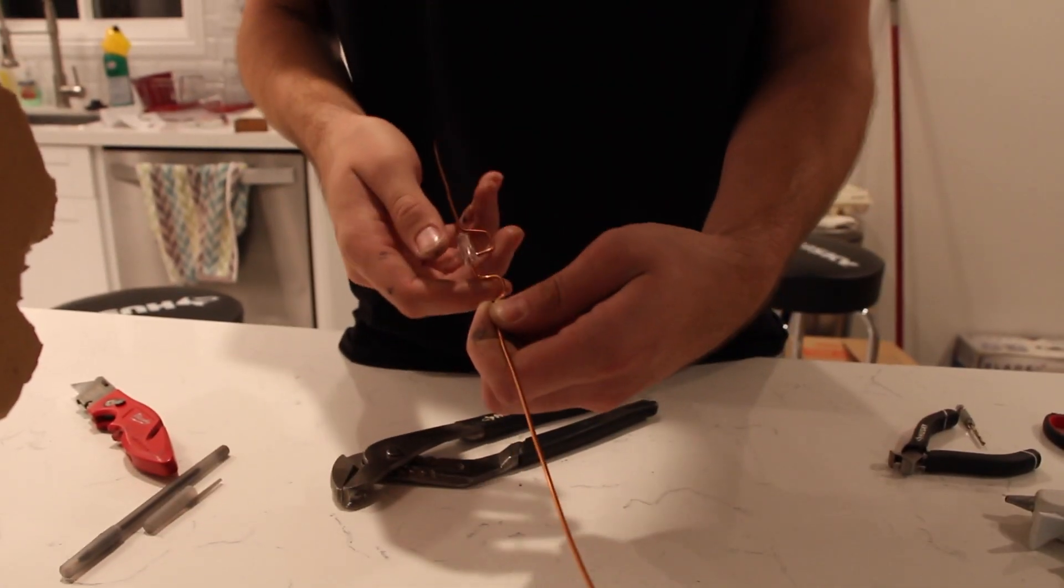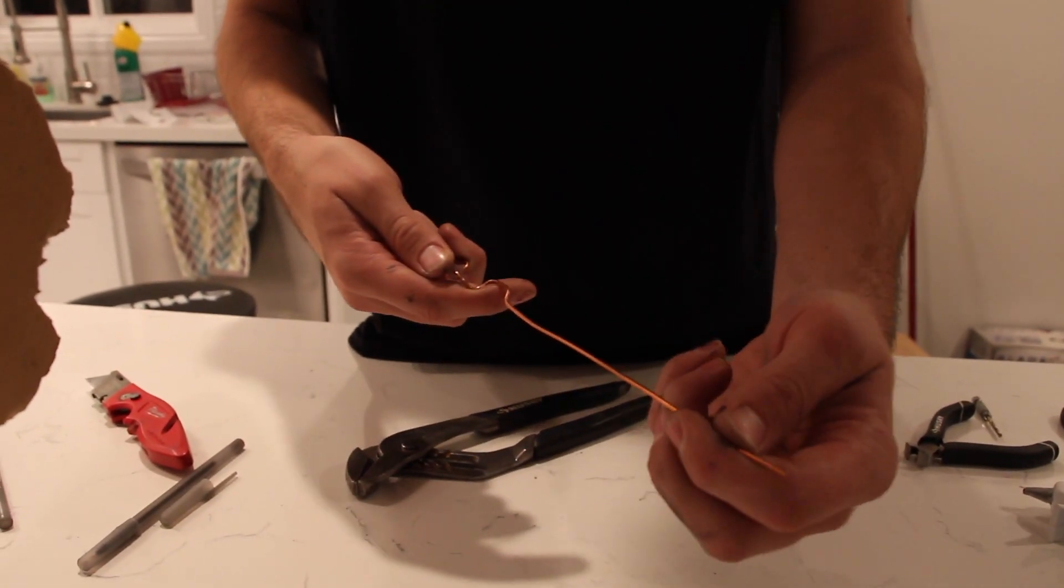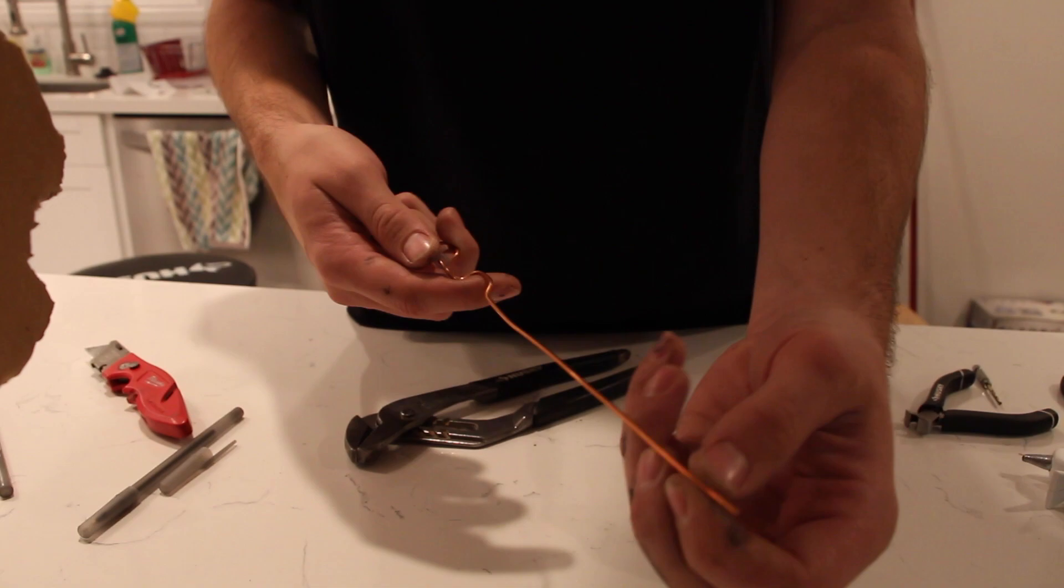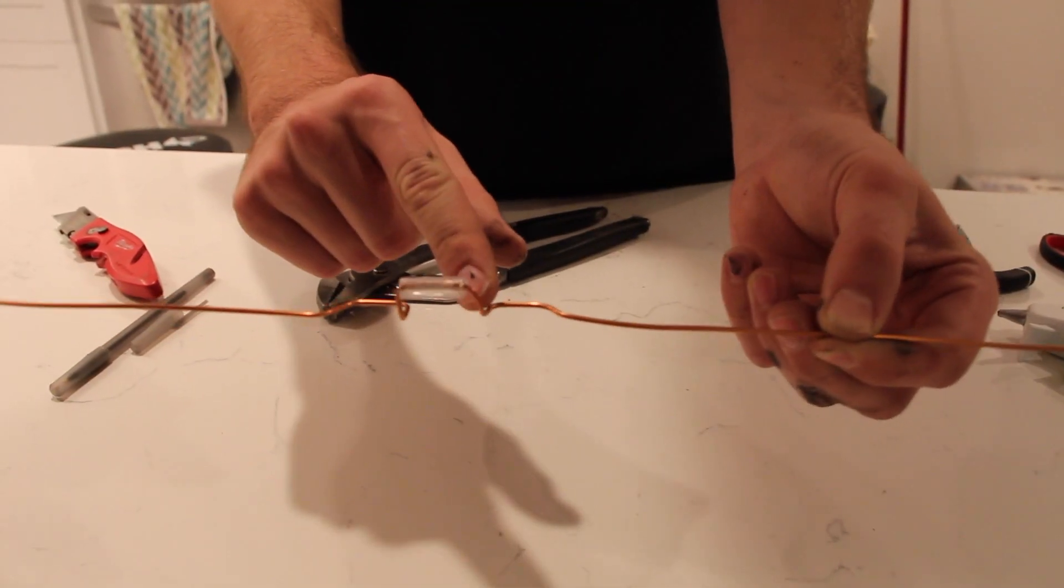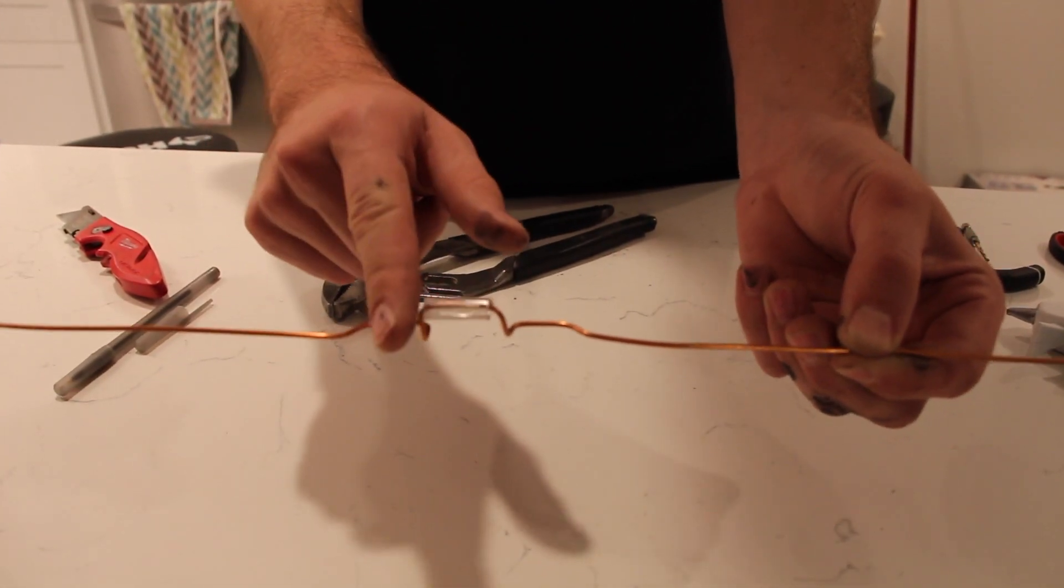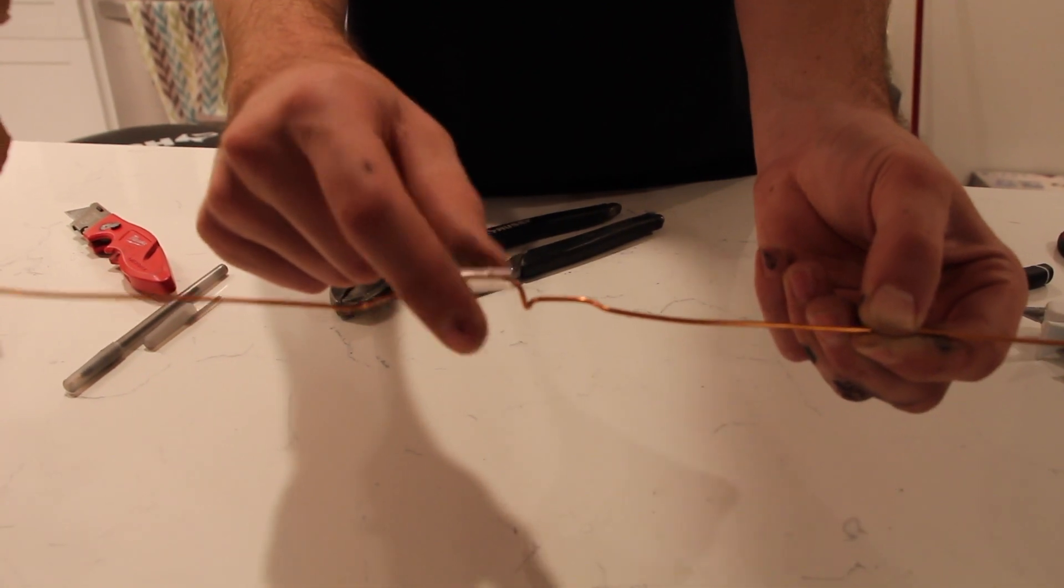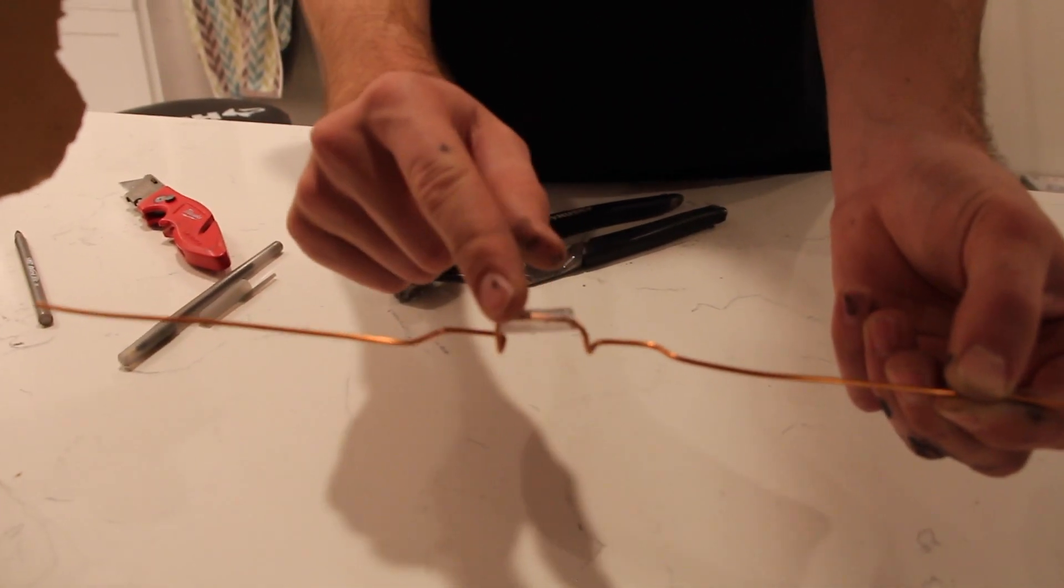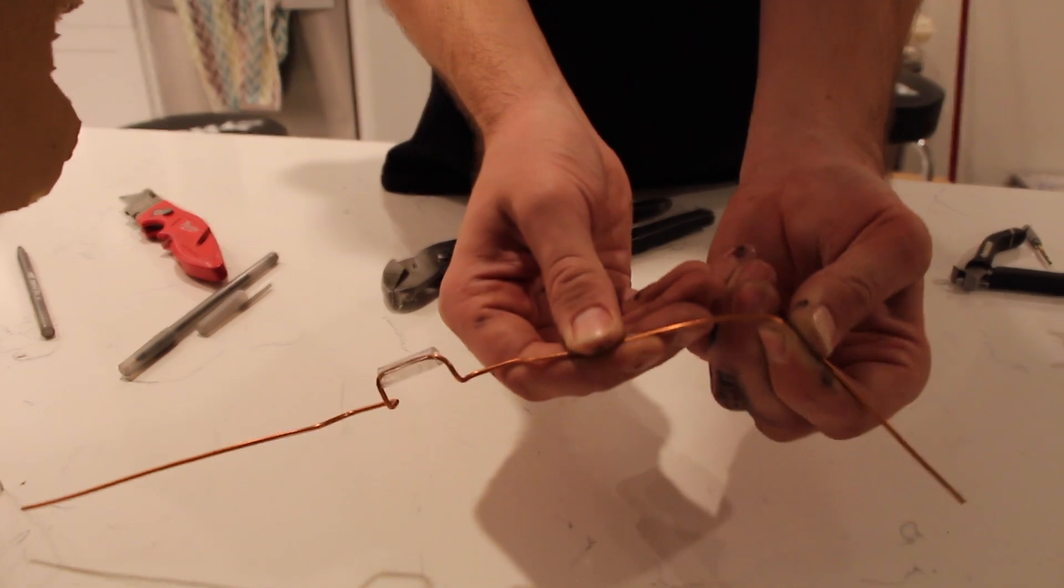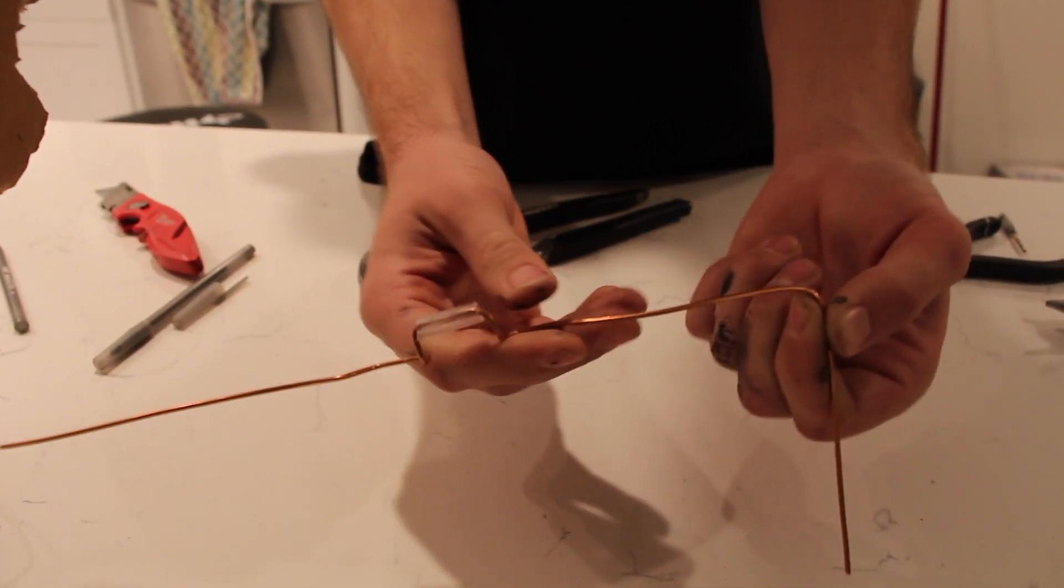You want to leave one side a little long because you're going to bend that up and it's going to hold your flywheel in place. You're going to want to bend it the opposite way of this U-shape for your displacement piston. So if this is up, you want to bend this down like this.